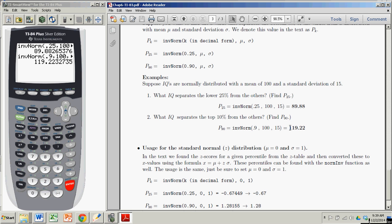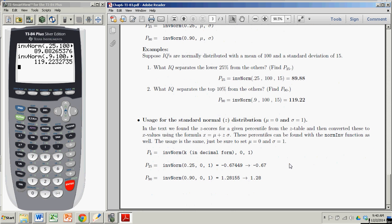So that is the IQ that separates the top 10% from the remainder. Really easy to use, and you don't have to convert back and forth from a Z score. If you are working with the standard normal Z distribution, and you want actual Z scores associated with a particular probability, the usage is exactly the same.